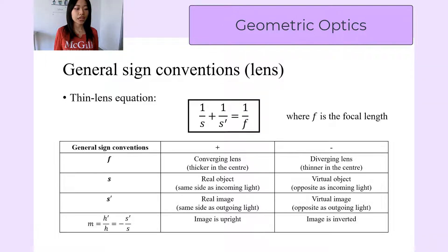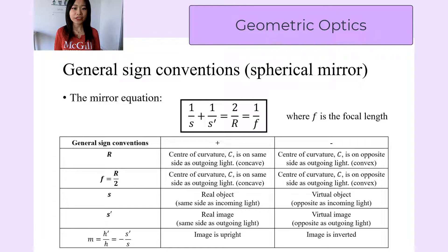The lateral magnification, m, is positive when the image is upright, and it's negative when the image is inverted. The sign conventions also work for spherical mirrors. The mirror equation looks exactly the same as the thin lens equation, with the focal length equal to the radius of curvature divided by 2.